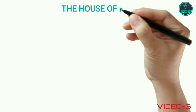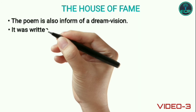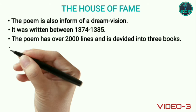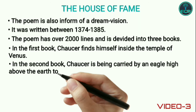Next, we have The House of Fame. The poem is in the form of a dream vision. It was written between 1374 and 1385. The poem has over 2,000 lines and is divided into three books. In the first book, Chaucer finds himself inside the Temple of Venus. In the second book, Chaucer is being carried by an eagle high above the earth to the House of Fame.